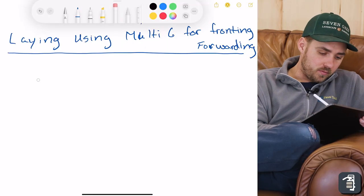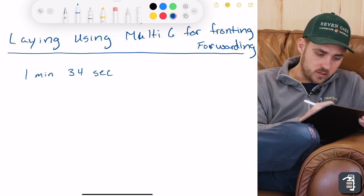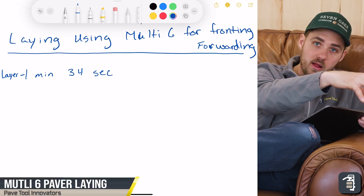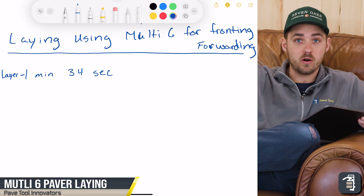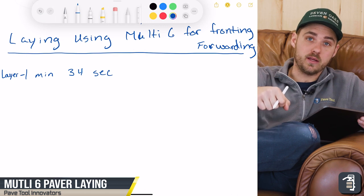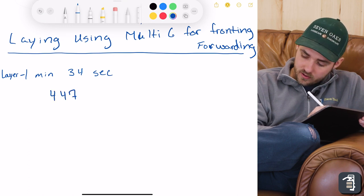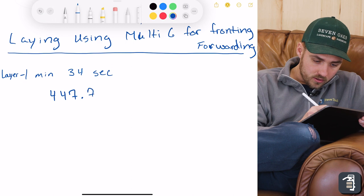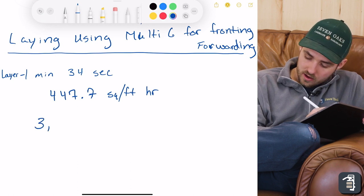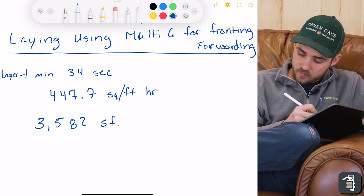Now in that application there, you're able to lay a layer of pavers at 1 minute 34 seconds. And this here is one layer, one layer of pavers bringing it from the pallet, grabbing it, setting it over on the pallet on the pavers that are already laid. One guy on a T handle setup grabbing those pavers and laying them in place. So in that case there, you're going to be able to lay 447.7 square feet an hour. Now in an eight hour day, that's going to equate to 3,582 square feet in an eight hour day.